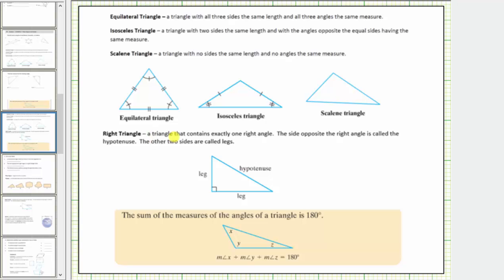A right triangle is a triangle that contains exactly one right angle. The side opposite the right angle is called the hypotenuse. The other two sides are called legs.